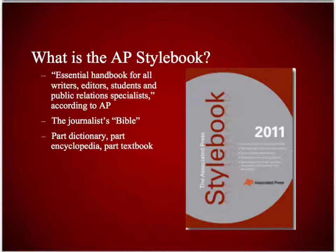This is what the book looks like — I gave you a picture of the 2011 version, and we have the 2013 version ready for you to pick up. This is your Bible: part dictionary, part encyclopedia, part textbook. Not everything's in it, so there will be some things you'll still have to look up in the dictionary or online. For example, someone wanted to know whether it was LGBT or GLBT — that's not in the style book. But for the most part, much of what you need will be in here.